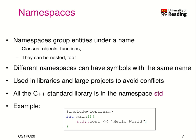The next feature that we saw is namespaces. Namespaces group entities under a name. So you can have anything there, like classes, objects, functions.